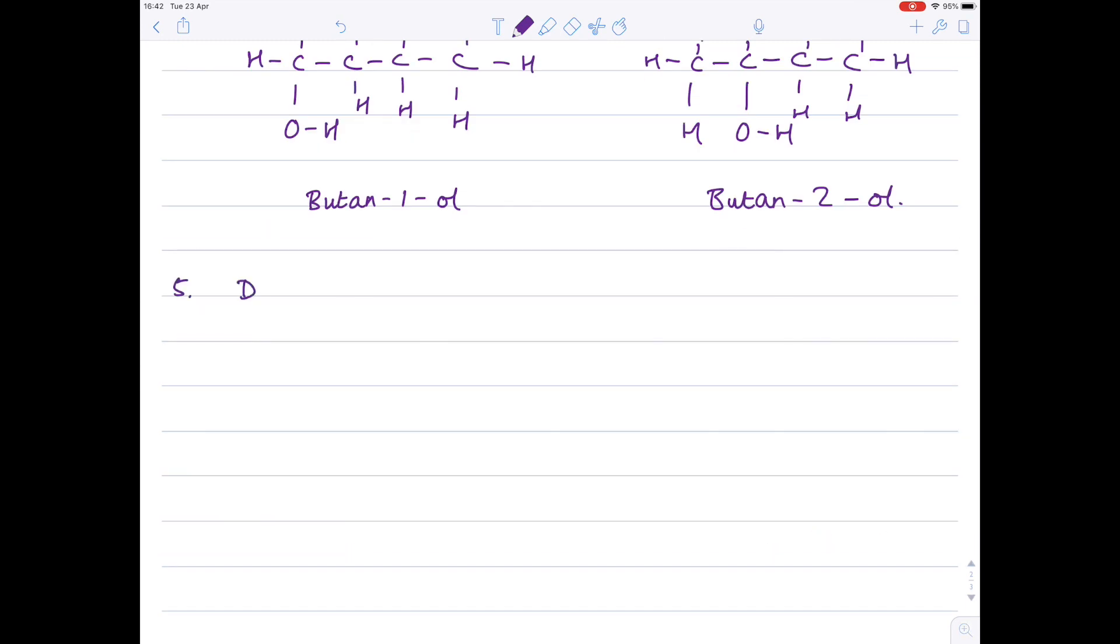Moving on to esters now. So draw an equation for the reaction between methanol and ethanoic acid. So we're definitely forming an ester here because we've got an alcohol reacting with a carboxylic acid. And the second part of the question, name the ester produced.